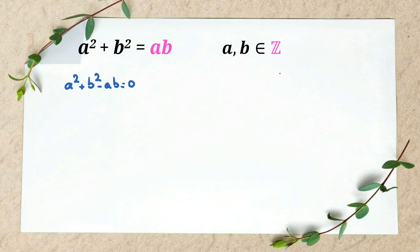We know that (x - y)² = x² - 2xy + y². Because we want to use this identity, I multiply both sides by two. Then we have 2a² + 2b² - 2ab = 0.